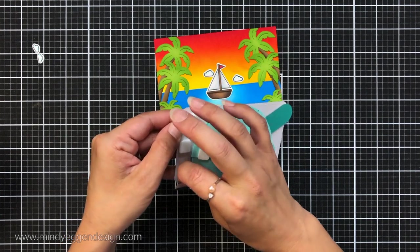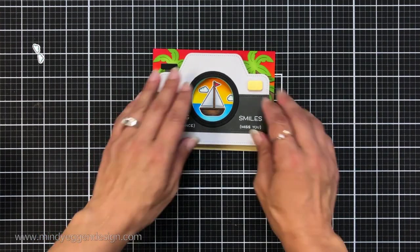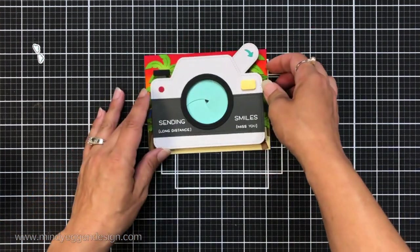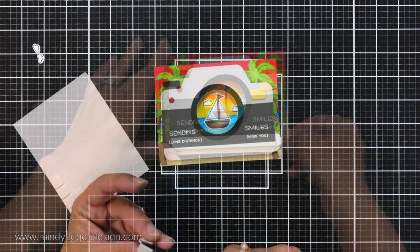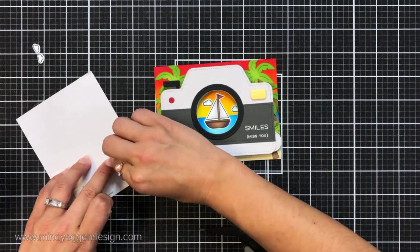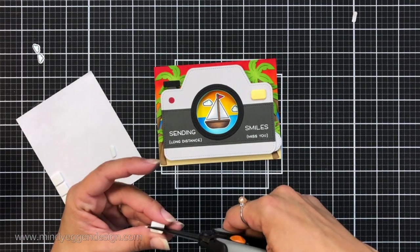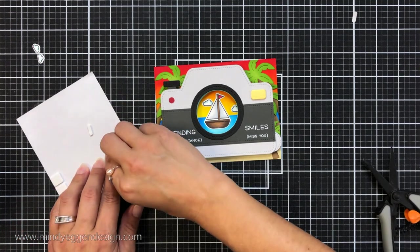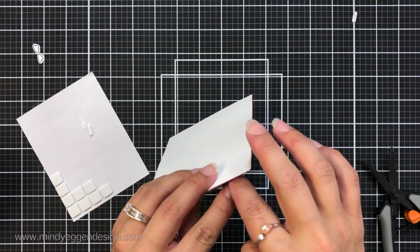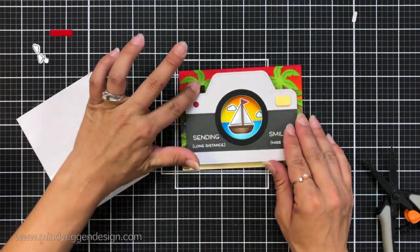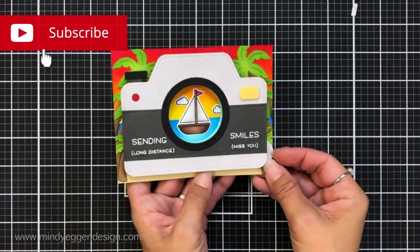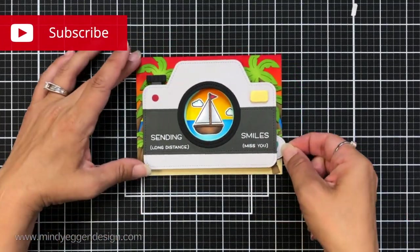Then I'll just remove the release paper on all of those foam squares, center in my sailboat and just push down and we are all set. Now one thing I did notice is I needed to add just a little strip of foam tape to the button because it was a little flimsy there so I just snuck that in really quick and here's a look at our completed card. We have the magic iris and the magic iris camera to reveal this gorgeous sunset scene.